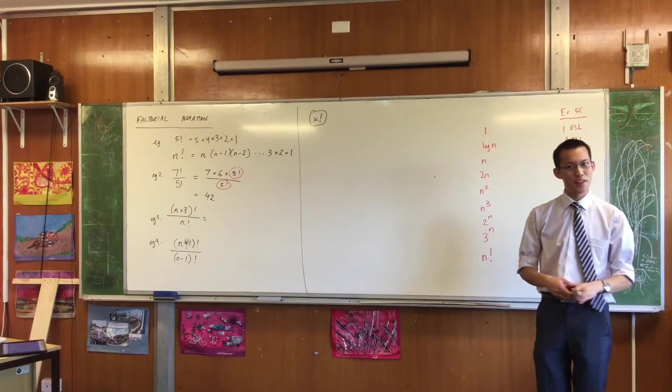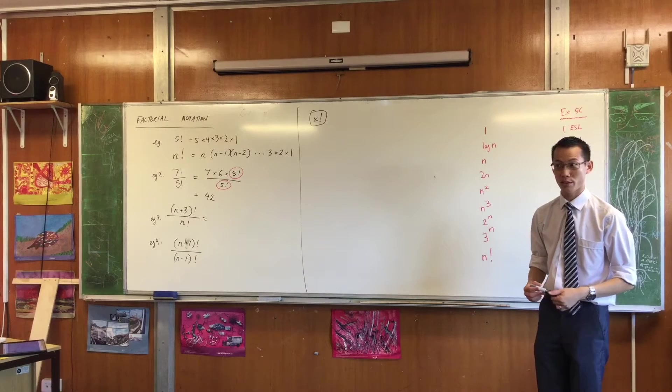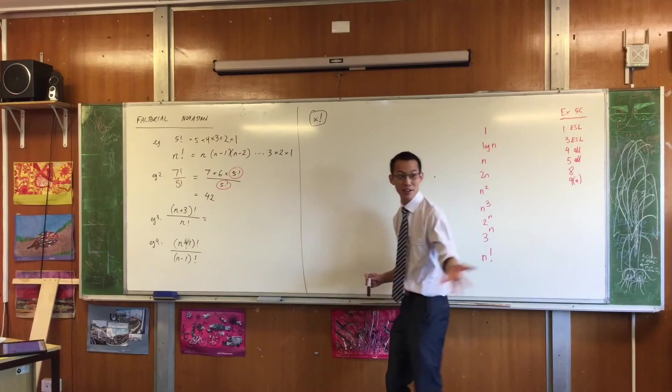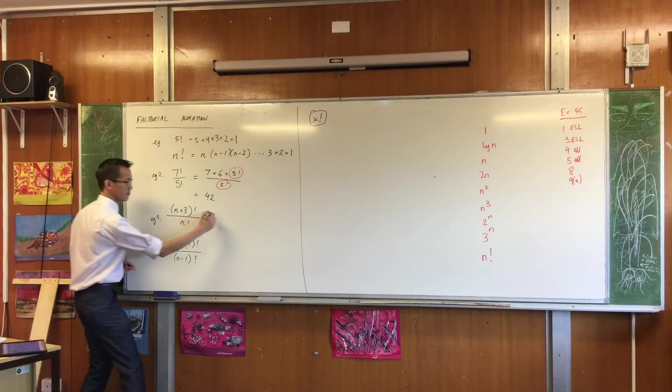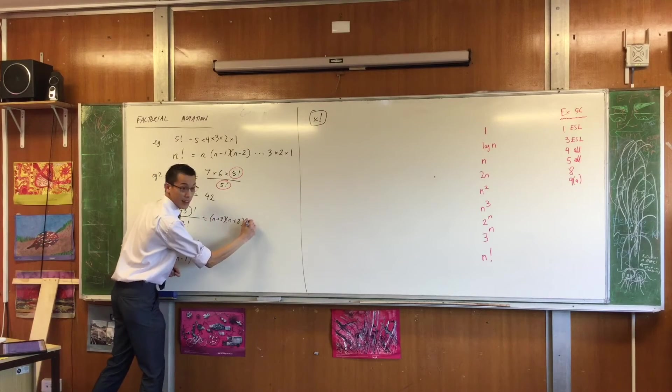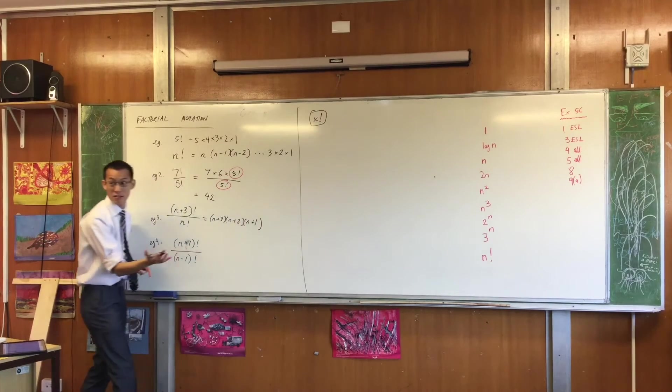How have we got there? What have you got for this first one? Example 3. Anyone want to be brave enough to offer a suggestion? Anyone? Yeah, Jake, what do you think? Would it be just bracket n plus 3, bracket n plus 2, bracket n plus 1? Bracket n plus 1. Full stop? What do you guys think? Happy? I agree.